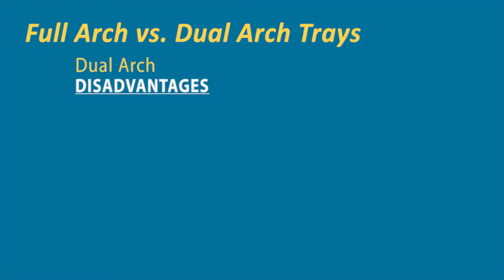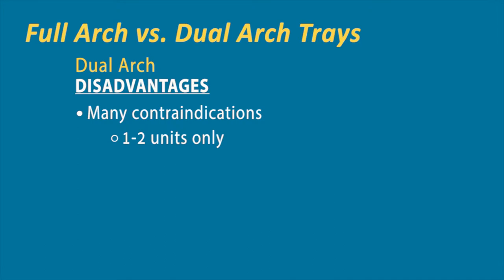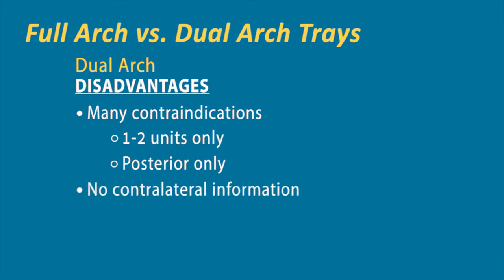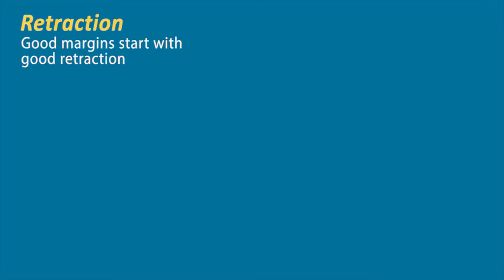Dual arch disadvantages: it's limited—one to two units only, so fairly limited on the type of product you can use. Generally recommended posterior only; getting into anterior cases, we really don't recommend a dual arch because we're looking to capture the cuspids and understand an occlusal plane and levelness of the smile, which is hard to capture with a dual arch. We're also lacking the contralateral information, making it more difficult to have a really accurate crown. And you still need a bite registration even though it's supposed to capture the proper bite.